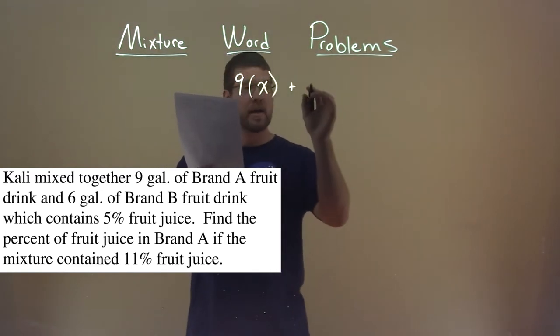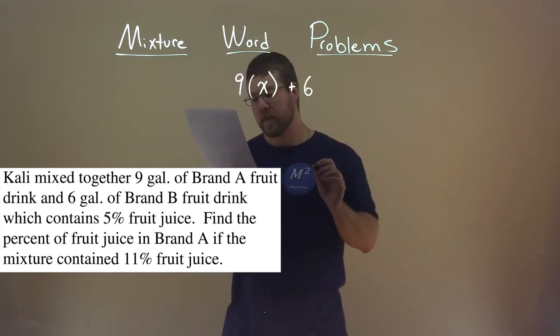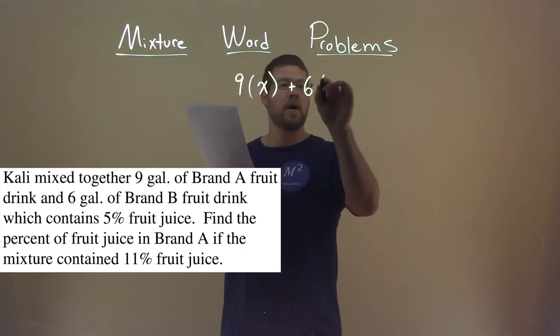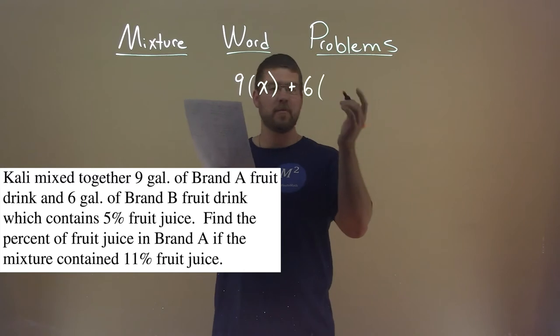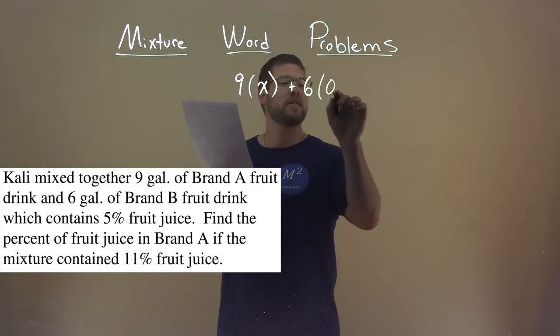We're adding that with 6 gallons of Brand B, and that percent fruit juice was 5%, which is 0.05 as a decimal.